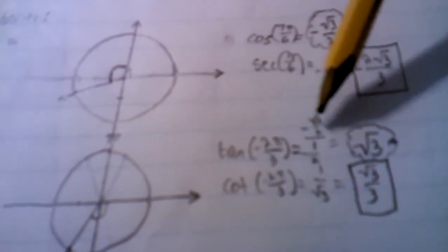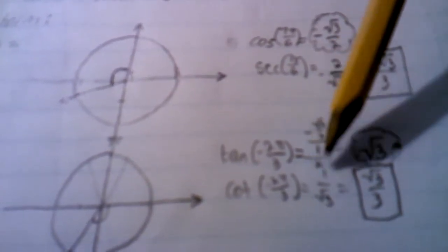Cotangent is related to tangent, so you take the tangent of -2π/3. That's going to be negative √3 over negative 1/2, or √3, same thing.